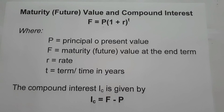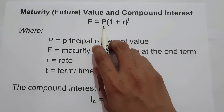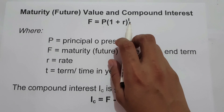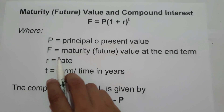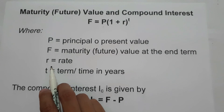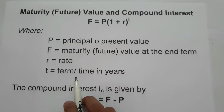In this video, we are going to focus our discussion on how to find the maturity value and compound interest compounded annually. The formula in finding the maturity value compounded annually is F equals P times the quantity of 1 plus R raised to T, where P is the principal or the present value, F is the maturity value or the future value at the end of the term, R is the annual rate, and T is the term or the time in years.